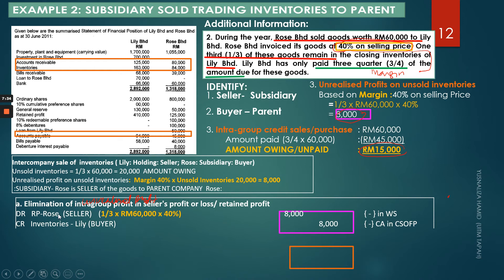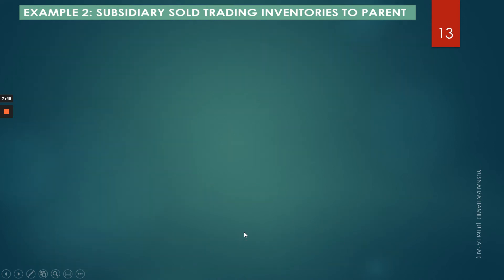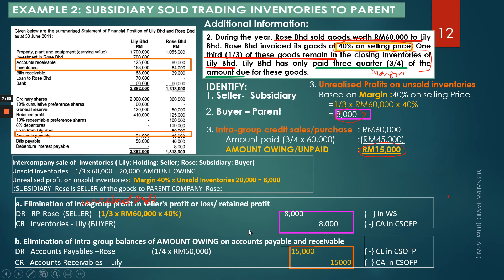For the elimination of unrealized profit: since the subsidiary is the seller, adjust in the seller's retained profit — go to Rose's retained profit, not Lily's column. Credit the inventory of Lily (the buyer) by 8,000. This adjustment will be reflected in the consolidation schedule on the next page.